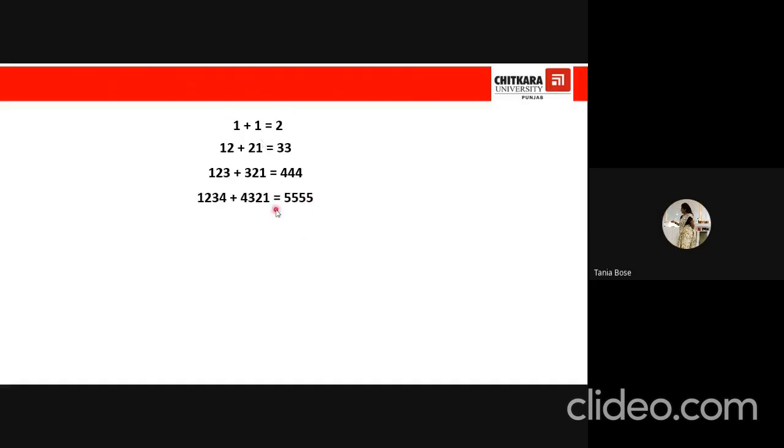Now what is happening here? Here we had 1 plus 1. So in the next step, we are having 12. We are inverting this number. So 12, we are writing it as 21. Look at the sum we are getting is 33. Here we have 123 plus we are inverting it. I am writing 321 and see what I am getting, 444.